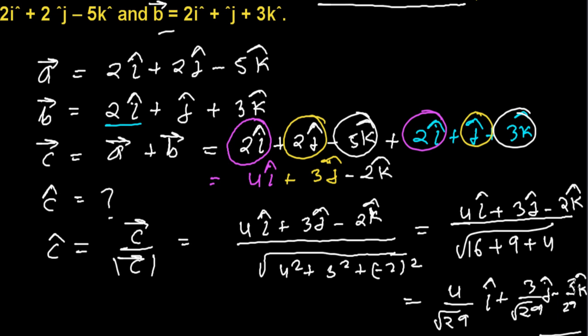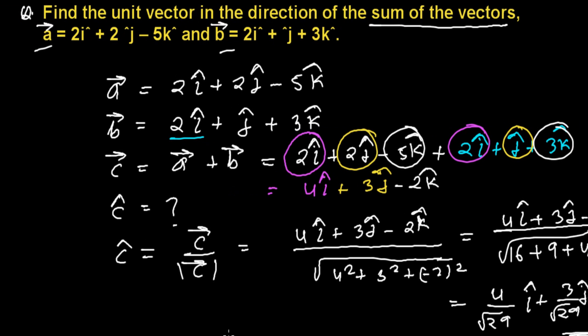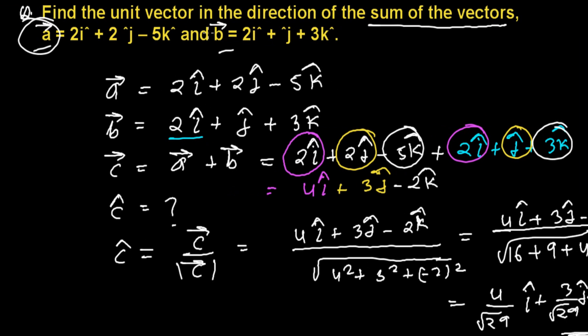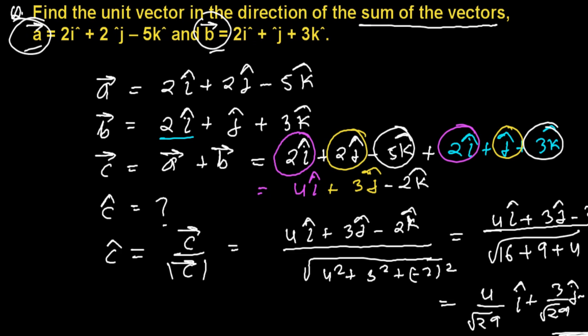So this is the required unit vector which is in the direction of the sum of the given two vectors a and b. I hope you understand it. Whenever you get two vectors, you can easily find out the sum or difference or multiplication or whatever you want, and then you can easily find out the unit vector of that.